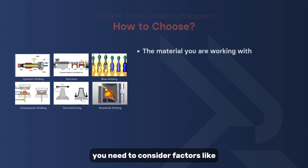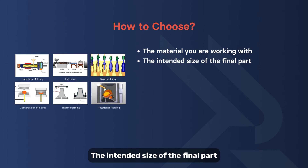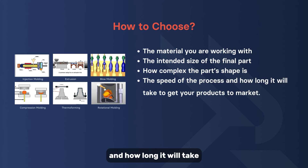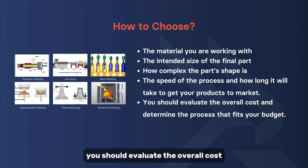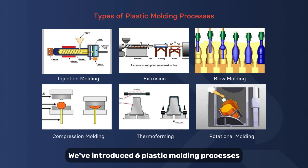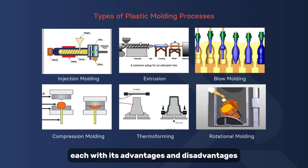There is no standard way to choose a molding process. You need to consider factors like the material you are working with, the intended size of the final part, the complexity of the shape, the speed of the process, and how long it will take to get your products to market. Finally, evaluate the overall cost and determine the process that fits your budget.